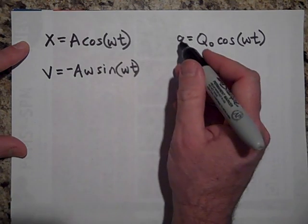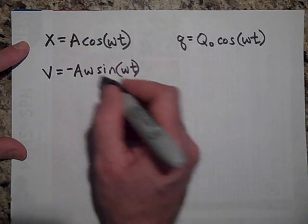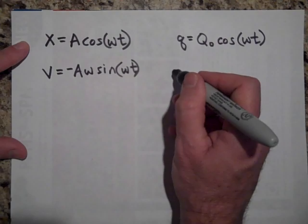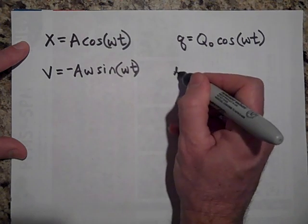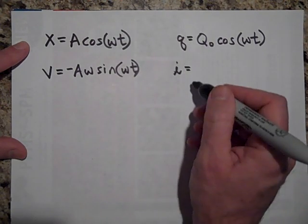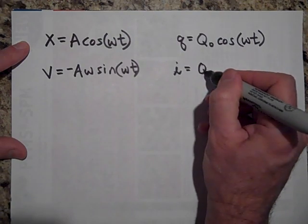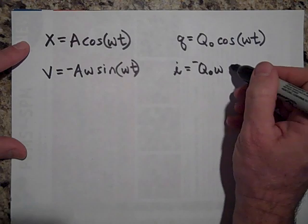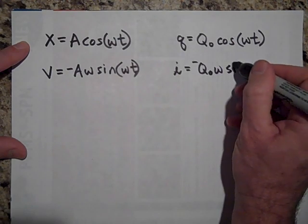And what's the derivative of Q with respect to time? This is dx/dt. dQ/dt is—it turns out that dQ/dt is i. If you take the derivative of Q with respect to time, and so that's going to be Q₀ times ω times the sine of ωt.